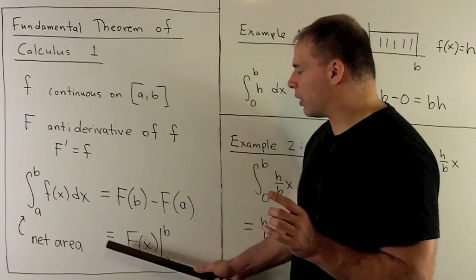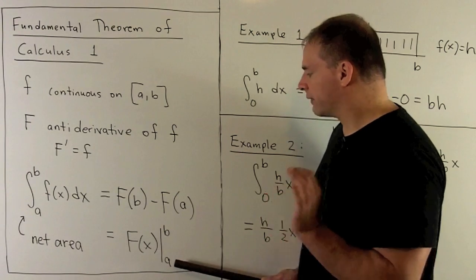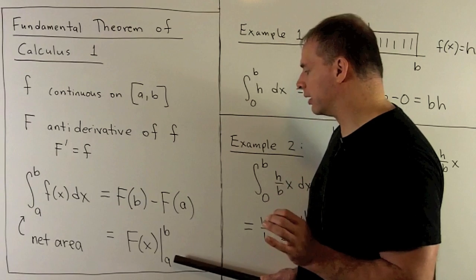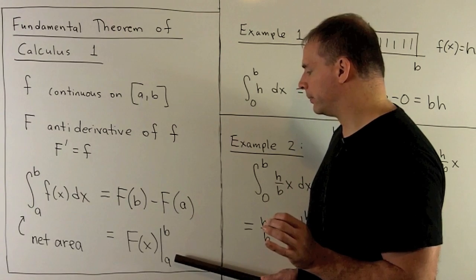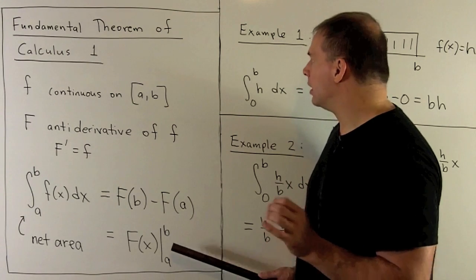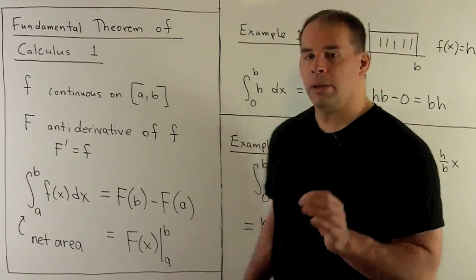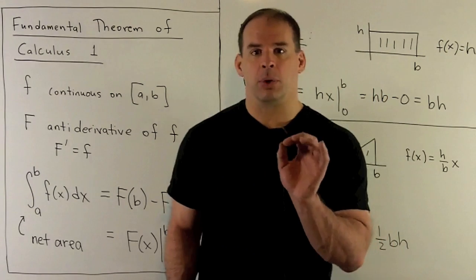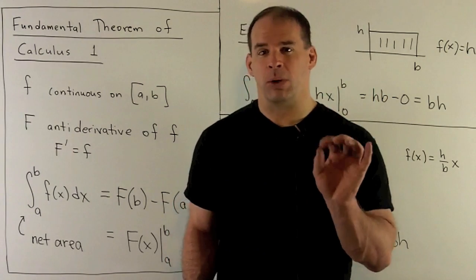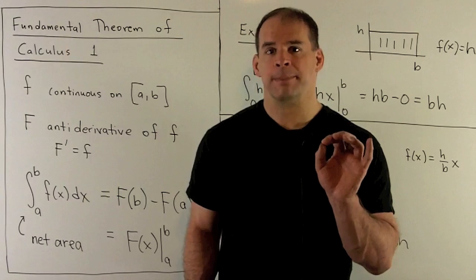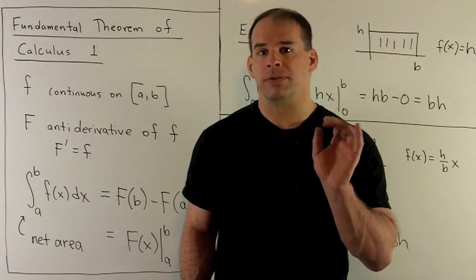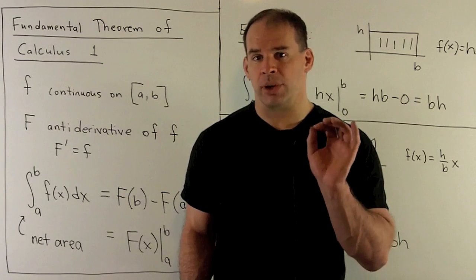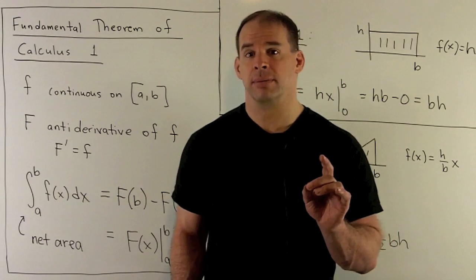We compute that as capital F evaluated at b minus capital F evaluated at a. Typically we write this in shorthand notation. Before we get into the proof and explaining what this means, let's go through a few examples just so we can get a feel for the mechanics.